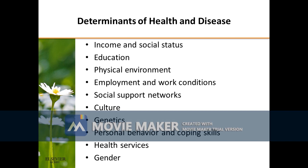These five categories are interconnected. The fifth category, social determinants of health, encompasses economic and social conditions that influence the health of people and communities. These conditions are shaped by socio-economic position, which is the amount of money, power, and resources that people have, all of which are influenced by socio-economic and political factors like policies, culture, and societal values.